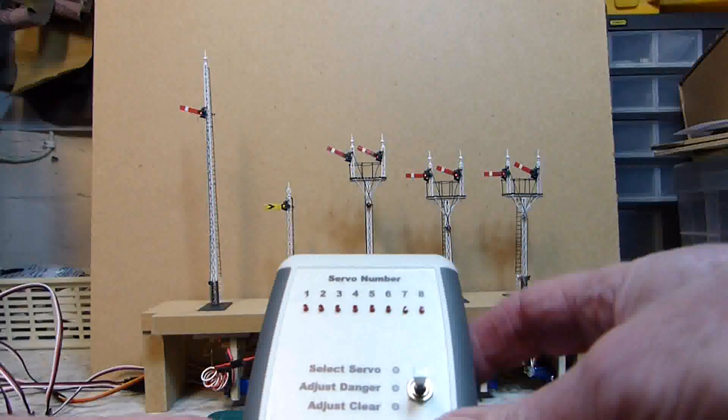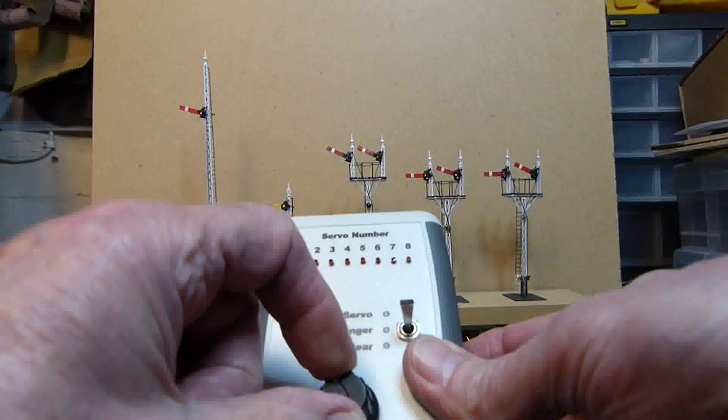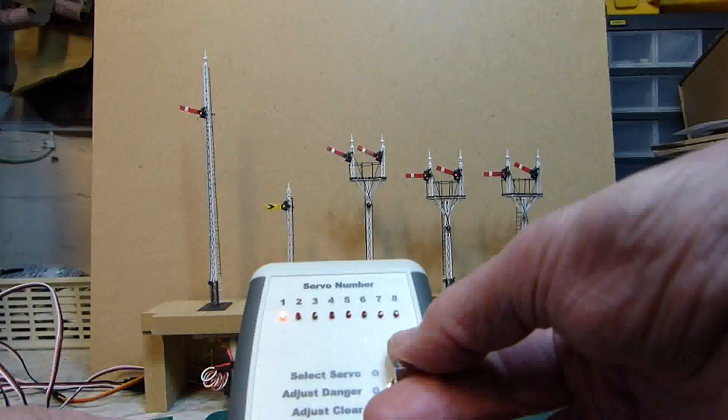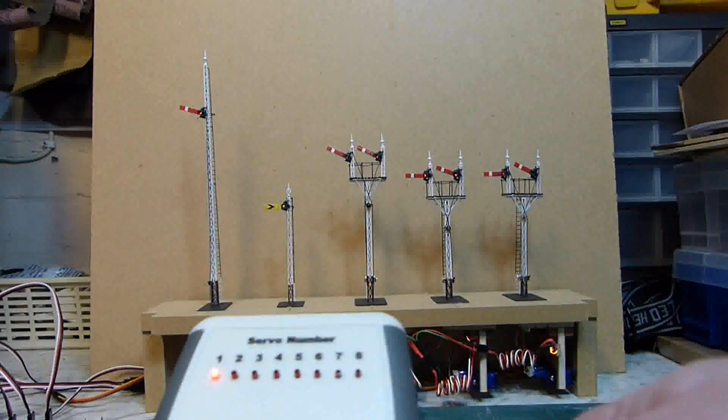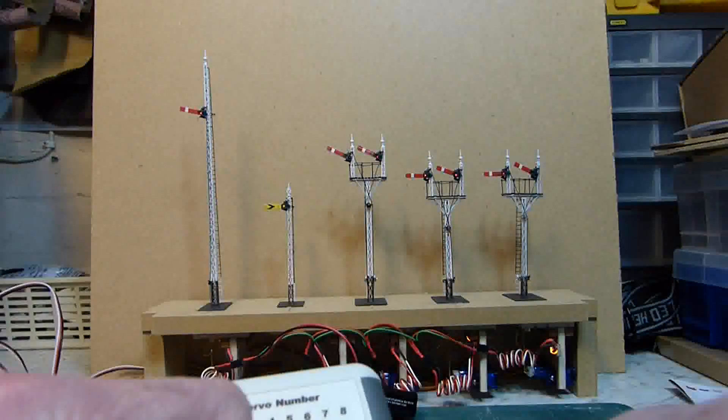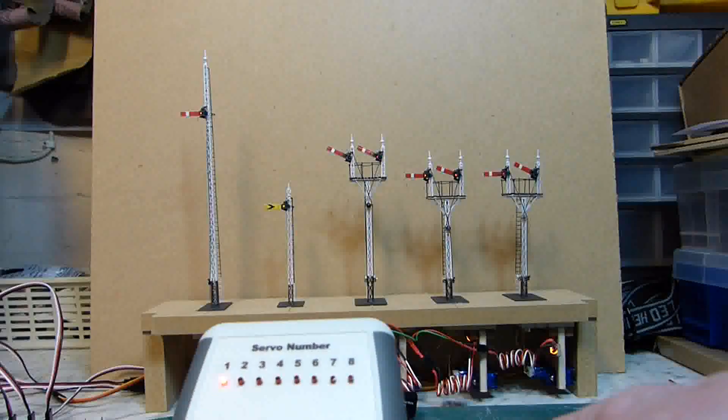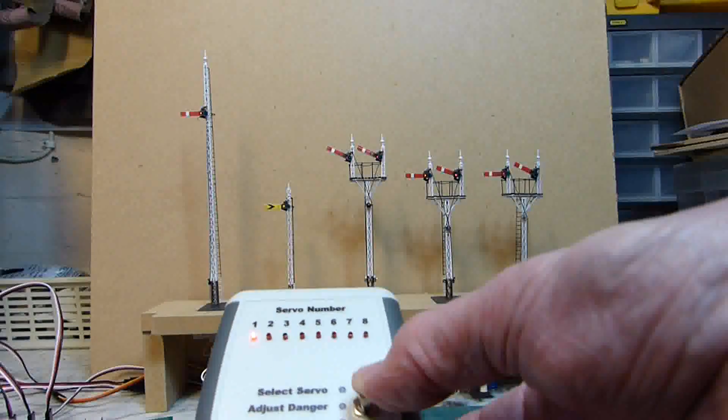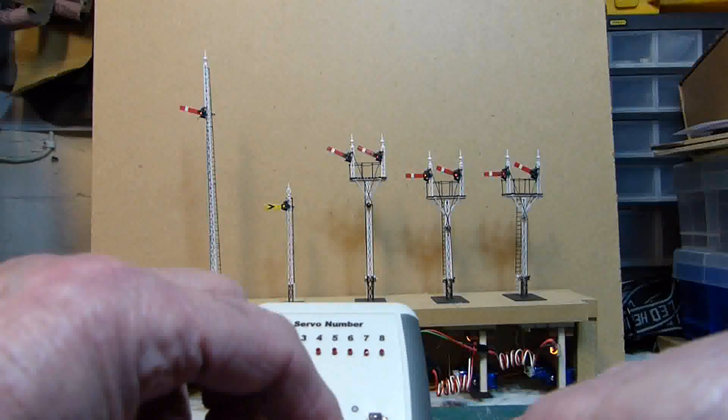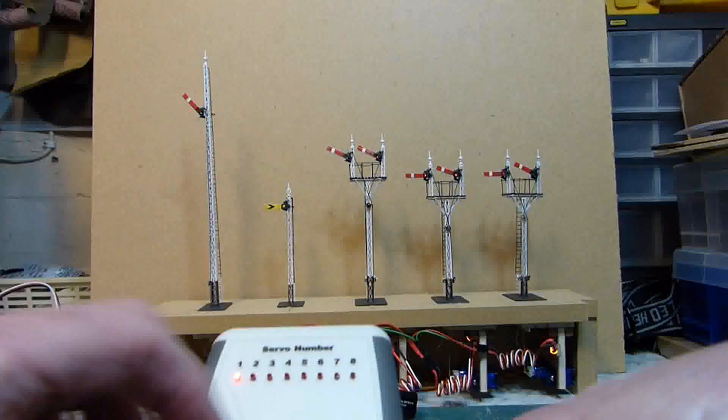First thing is to put the setter box into servo select mode and then adjust servo number one. There we are and now we can set servo number one or signal number one to the danger position. We do that simply by turning the adjustment knob and the servo will move the signal down to the horizontal, about there. Now move to the adjust clear position. The signal has gone back to the position it was in previously which we now increase the movement up to a fully clear position, about there.